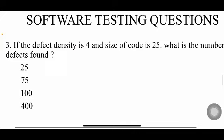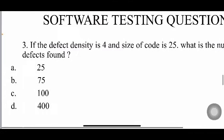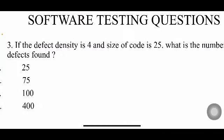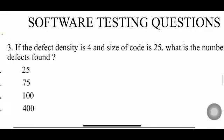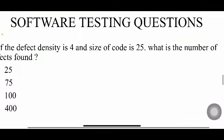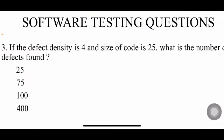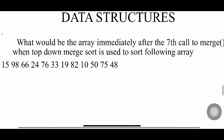If the defect density is 4 and size of the code is 25, what is the number of defects found? Here you have a formula: defect density equals number of defects divided by size of the code. So 4 equals number of defects divided by 25. When you multiply 25 and 4, you'll get the number of defects, which is 100.